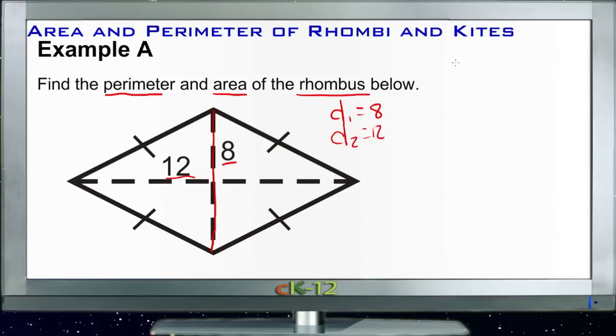Remember our formula: the area equals D1 times D2 times one half. So we're going to multiply 8 times 12, that's 96. So we've got 8 times 12 times one half, that's 96 times one half. So our area is 48 square units.